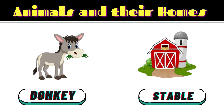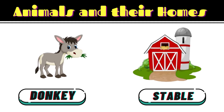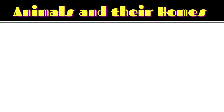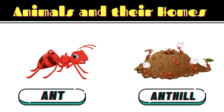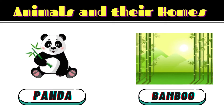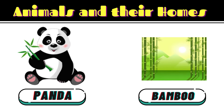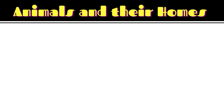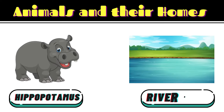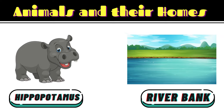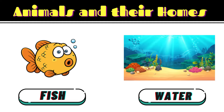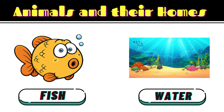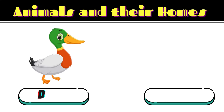Donkey. Donkey lives in a stable. Ant. Ant lives in an anthill. Panda. Panda lives in a bamboo forest. Hippopotamus. Hippopotamus lives near river banks. Fish. Fish lives in water.